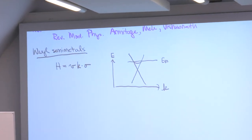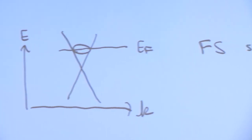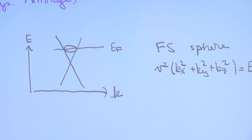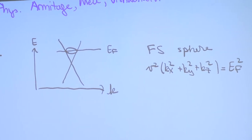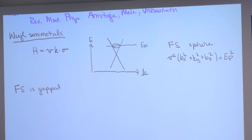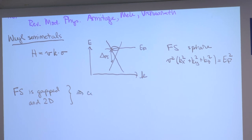Along this Fermi surface, the Fermi surface is gapped. Since the Fermi surface is not exactly at the Weyl point, there's some gap between the conduction and valence bands. The Fermi surface is a gapped manifold generically, and it's also a 2D manifold because it's a sphere. So we can apply the formalism that David was discussing — this is a gapped 2D manifold, so we can compute its Chern number. In that way, we can apply the notion of a topological invariant to a semimetal.